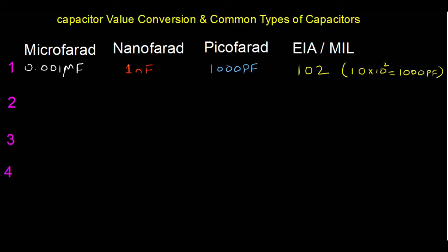Second example: we start with 4700 picofarad and convert it to EIA or mil code. On ceramic capacitors, 4700 pF is not written out in full — instead it is marked as 472.